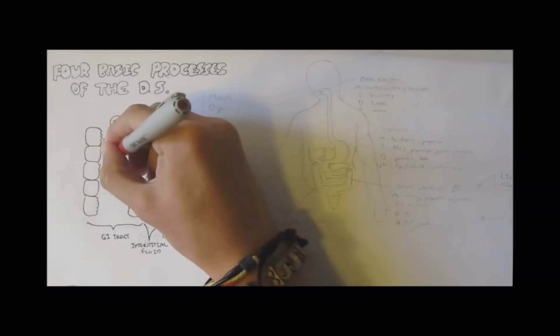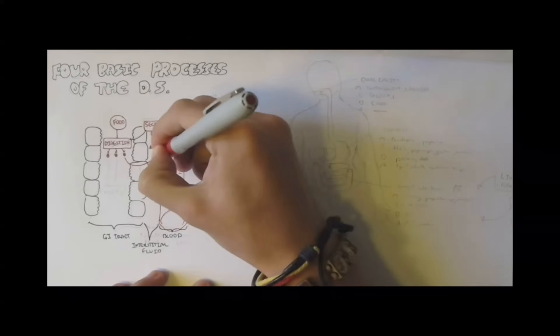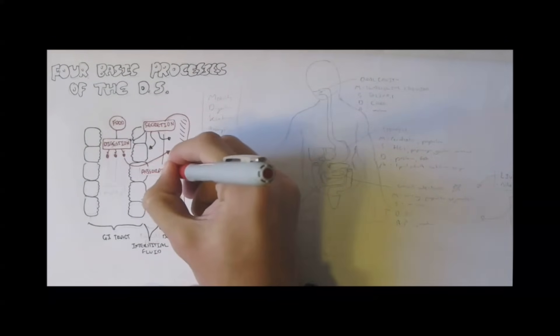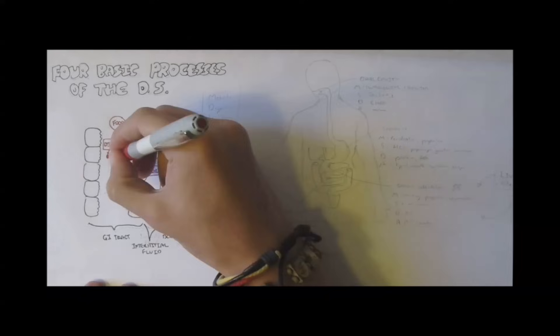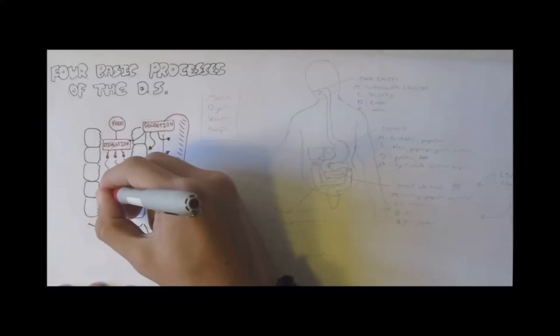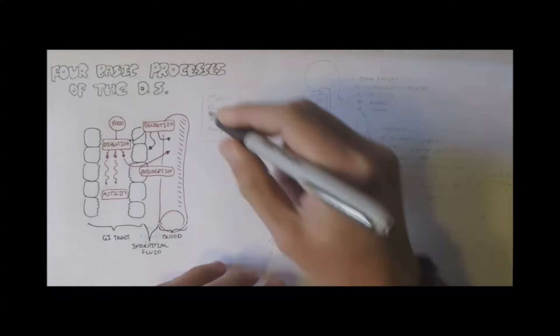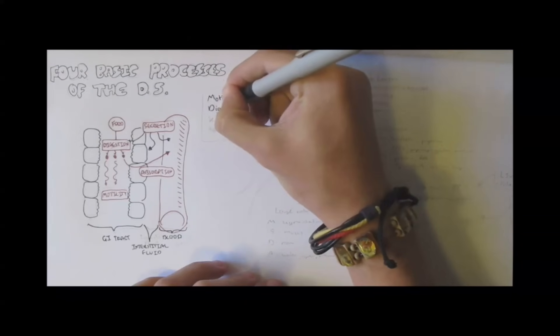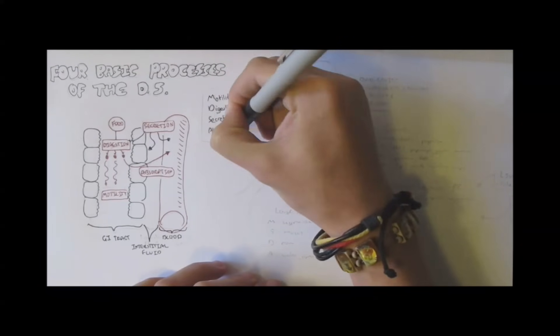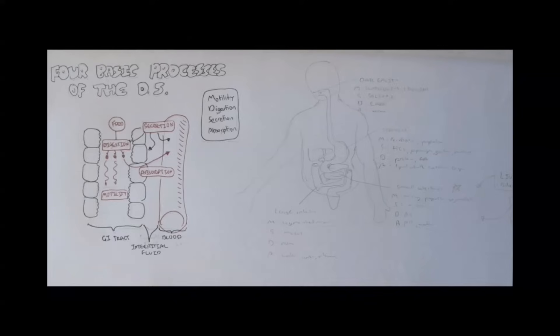Digested food will be absorbed, absorption, which is another important process. And then the food will also move through the gastrointestinal tract, so motility, movement. So again we have M for motility, D for digestion, S for secretion, and A for absorption.